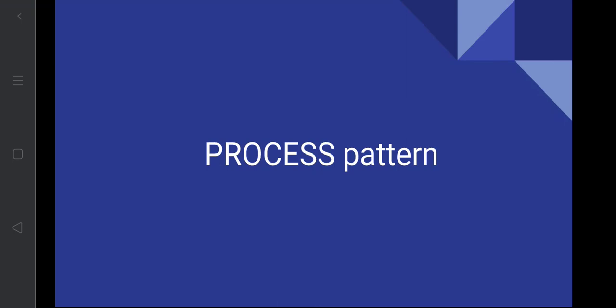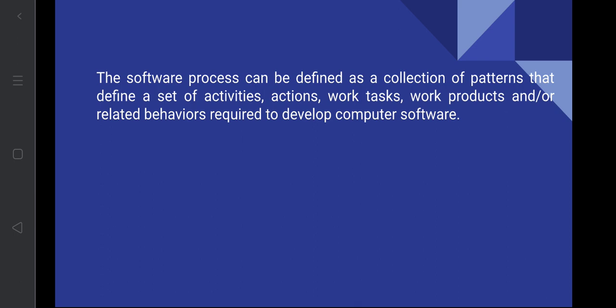In this video we are going to look at the process pattern. A process is an activity by which software is built, and software is a collection of programs and a set of documentation. In order to develop software, it requires a list of processes and continuous tasks. To build those processes, it has to follow some pattern, so a software process has been defined as a collection of patterns.